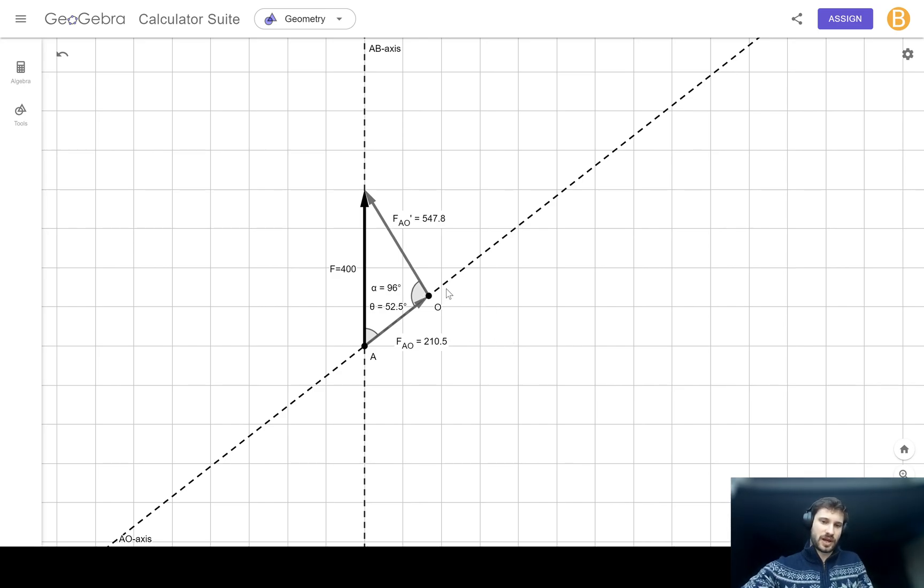It might be safe to assume then that what the problem is asking for here really is the value of FAO, of this FAO component, where the angle with its complement is 90 degrees. So we kind of have a little bit of a spoiler here that our answer is going to be in the region of 243. But let's go ahead and solve this.